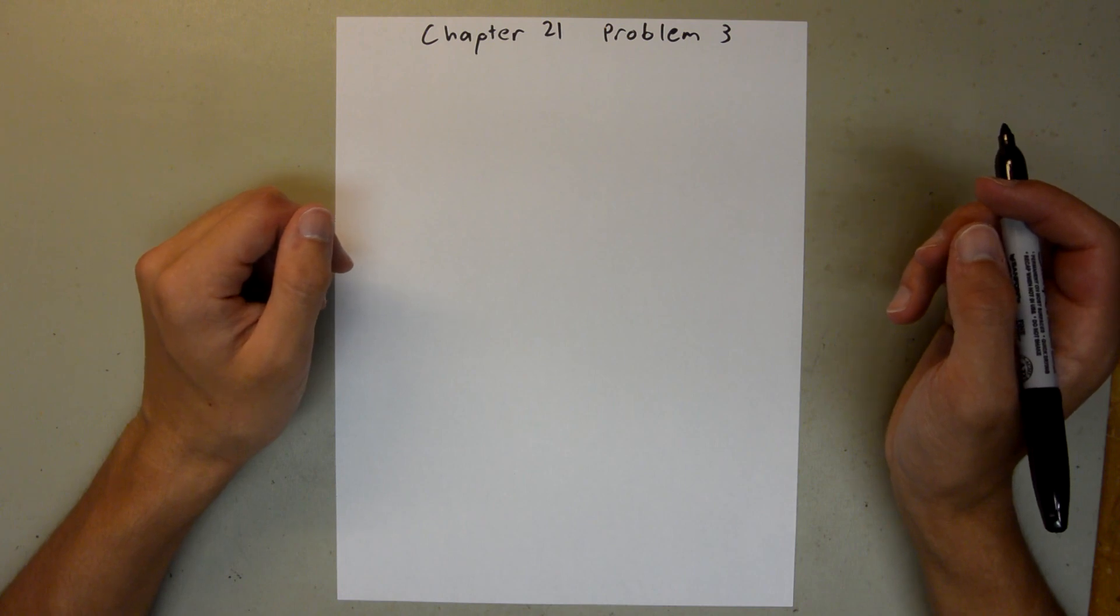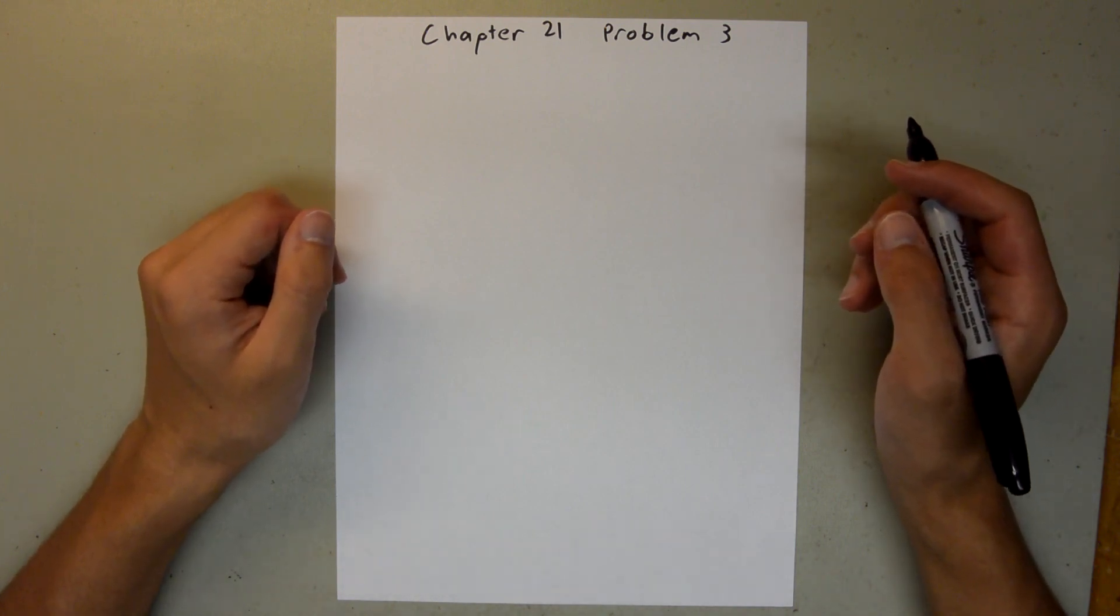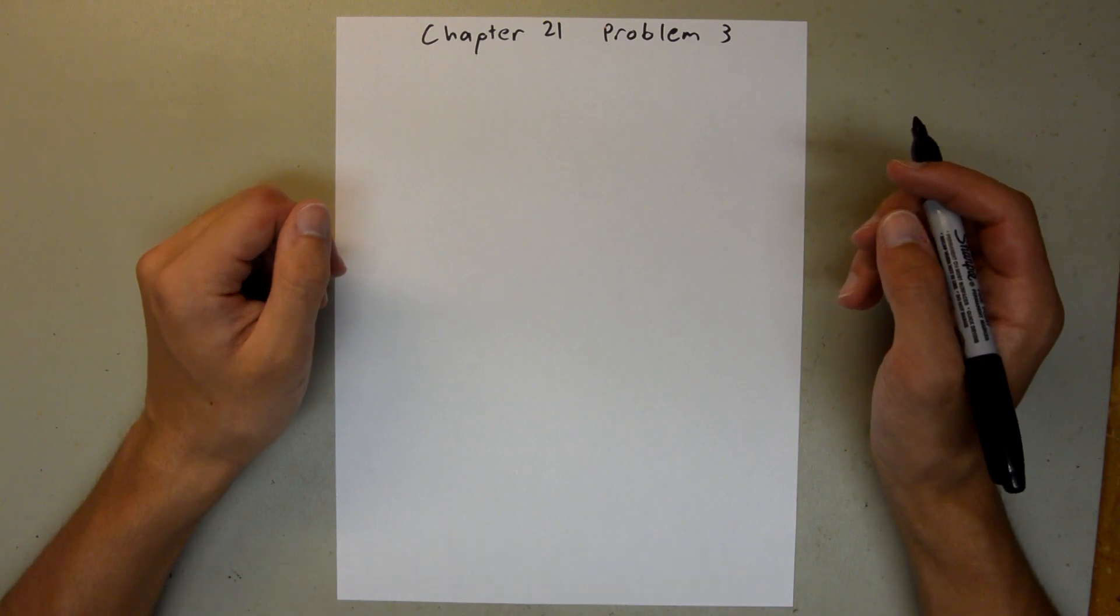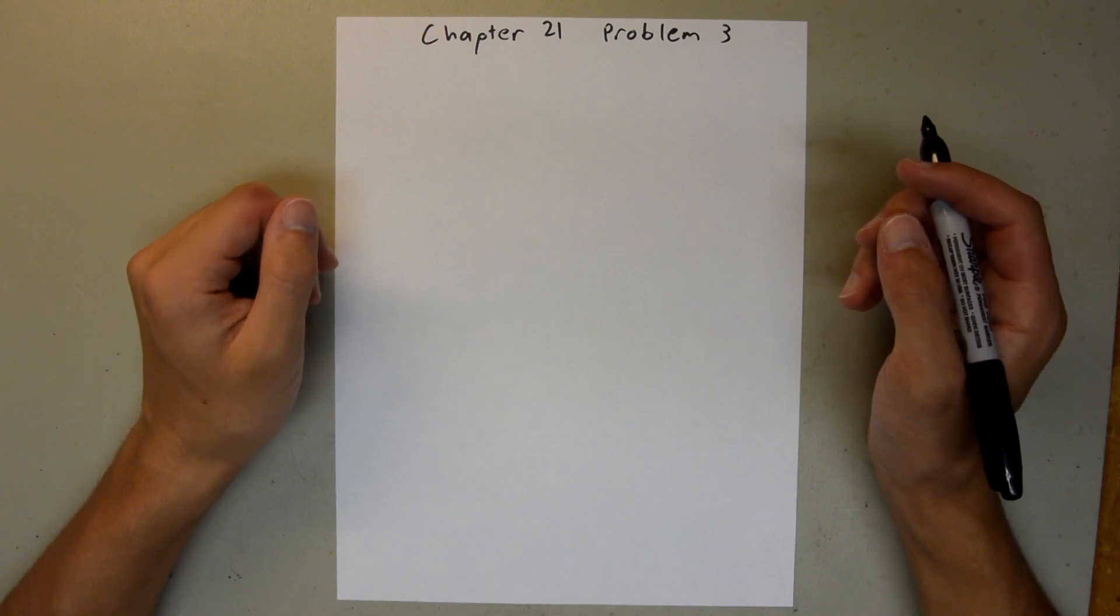Chapter 21 is all about electric charge, and in particular, Problem 3. We have two particles with different charges, and we are told the distance between them, and we are asked to find the magnitude of the electrostatic force that results between them.